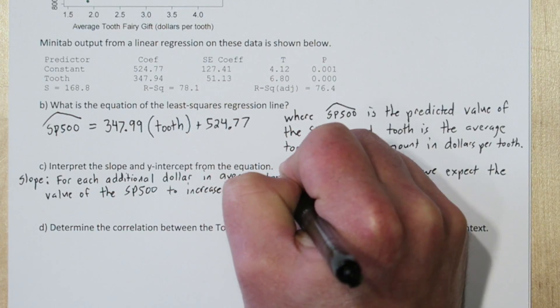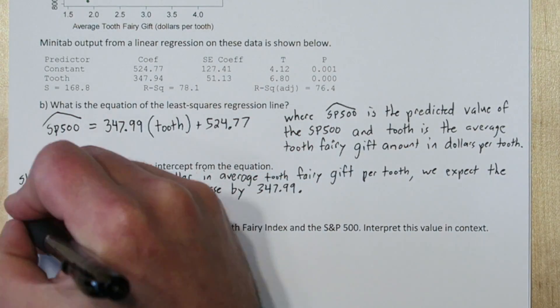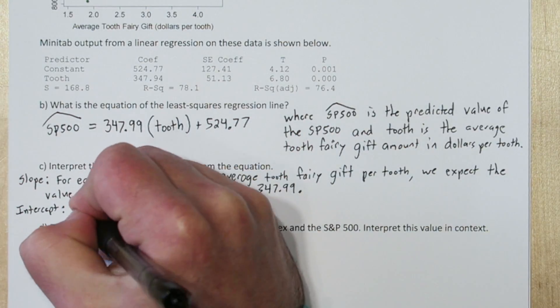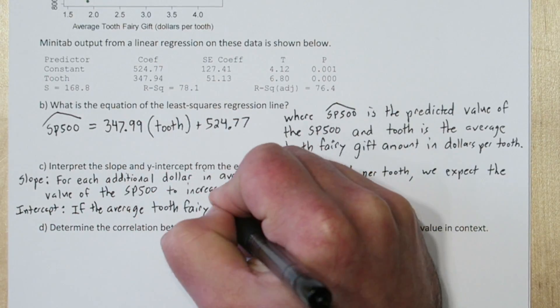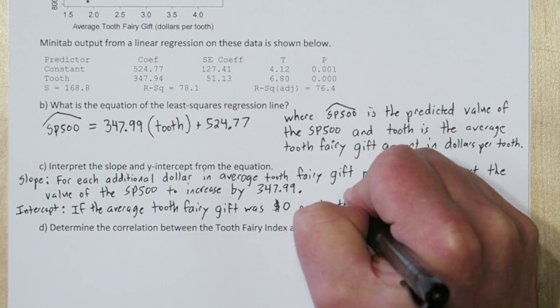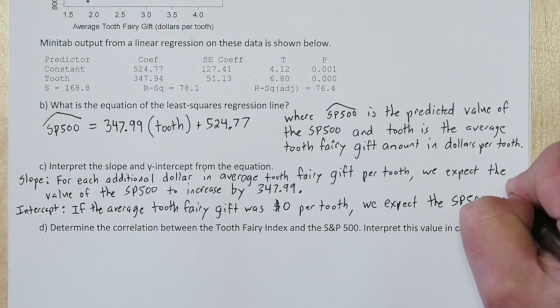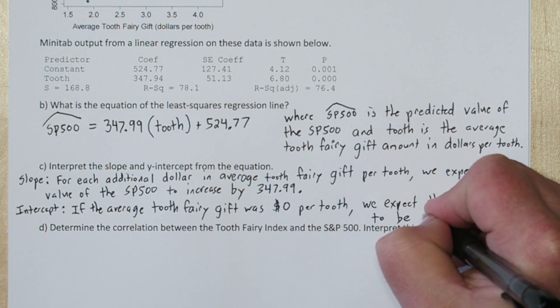That's all multiplication is, repeated addition. We can interpret the y-intercept like this: if the average tooth fairy gift was $0 per tooth, we expect the S&P 500's value to be 524.77.